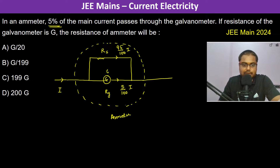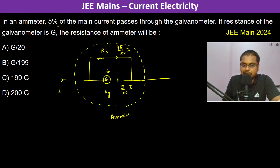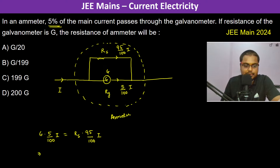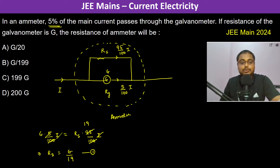If the resistance of the galvanometer is G, we can apply voltage equality: G × (5/100 × I) = RS × (95/100 × I). Simplifying, the 100s and I cancel, giving RS = G/19. So the shunt resistance is G/19.